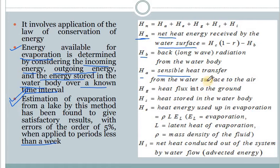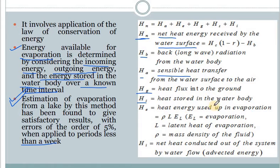H_g is the mean heat flux into the ground — whatever heat goes inside the ground is represented by H_g. H_s is the heat stored in the water body. H_e represents the heat energy used in evaporation — whatever energy gets used for evaporation is H_e. H_i is the net heat conducted out of the system by water flow. By this equation you can easily calculate your evaporation.